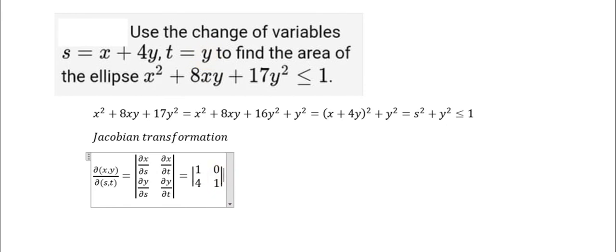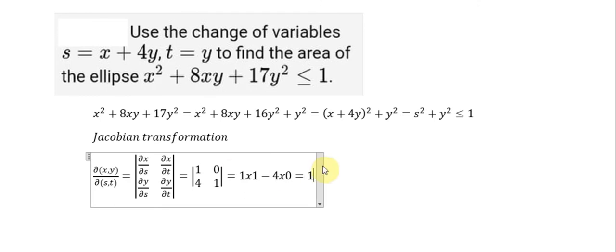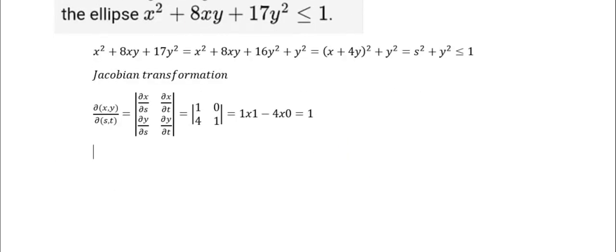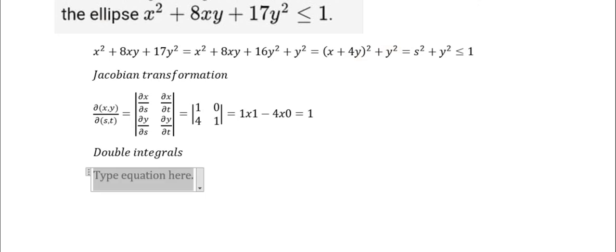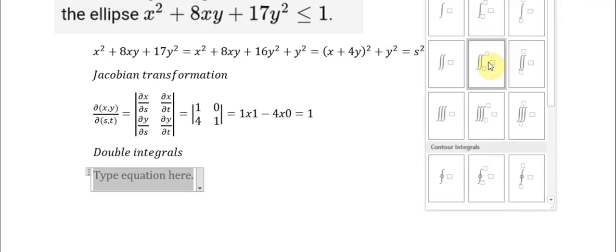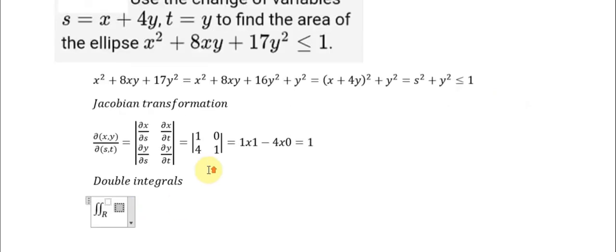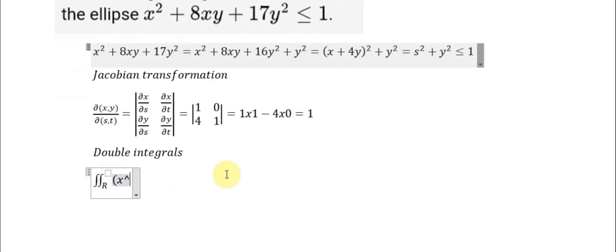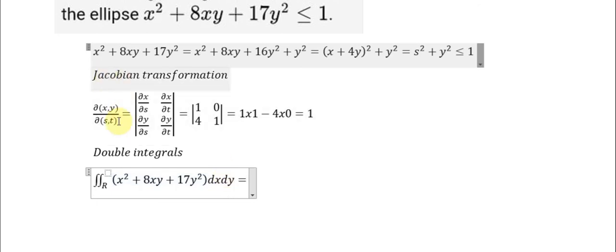We have 1 multiplied by 1 minus 4 multiplied by 0, and we get 1. Then we apply the formula of the double integral. We have the double integral over region R, and now we apply the Jacobian transformation to change this double integral into a new double integral in dS dY.